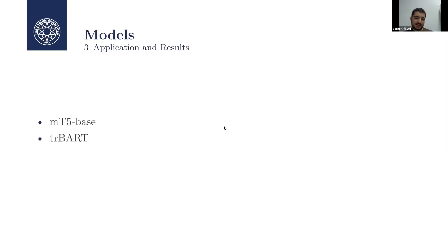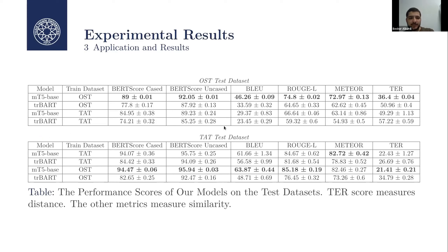For our results, we now have datasets with Turkish paraphrase pairs. To evaluate our filtering method, we used two pre-trained sequence-to-sequence models: mT5-base, trained by Google, and TRBART, a variant of BART trained on Turkish datasets by a team at a Turkish university. The results show that all metrics except TER indicate similarity — TER measures distance. The mT5-base model trained on Open Subtitles outperformed all other models on both the Tatoeba test dataset and the Open Subtitles dataset, suggesting our Open Subtitles dataset is of higher quality.